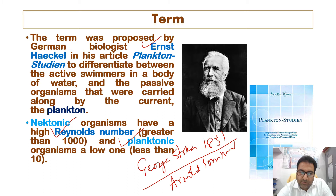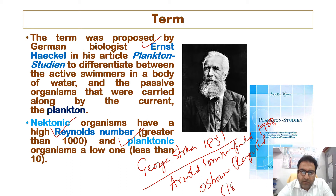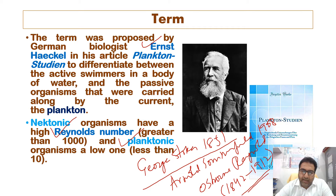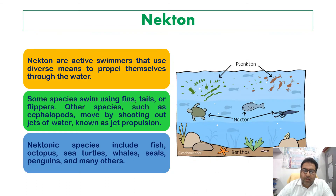Arnold Sommerfeld coined the term 'Reynolds number' after Osborne Reynolds, who lived from 1842 to 1912 and who popularized its use in 1883. So the concept was given by George Stokes in 1851, the term was used by Arnold Sommerfeld, and it was named after Osborne Reynolds who popularized it in 1883.